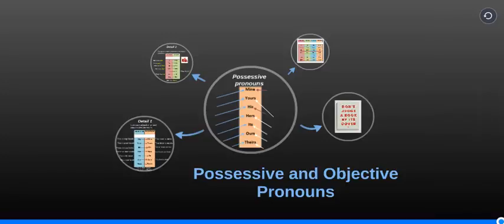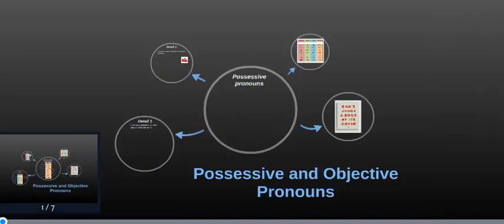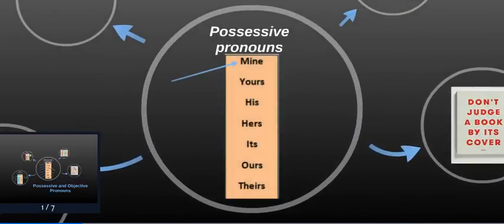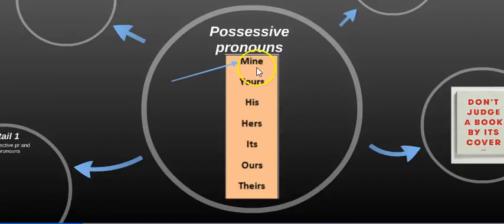So let's study the possessive and objective pronouns. The possessive pronouns, we have seven forms.